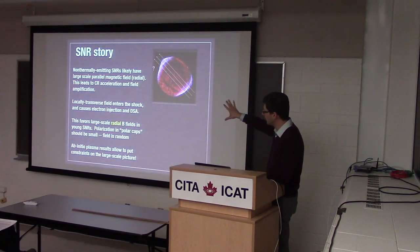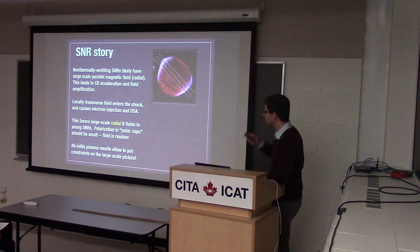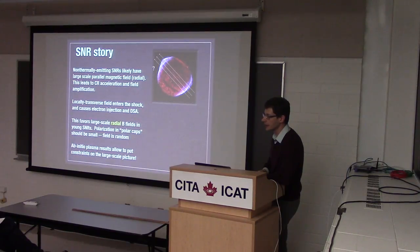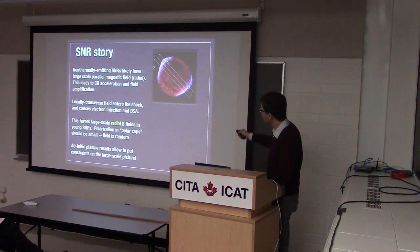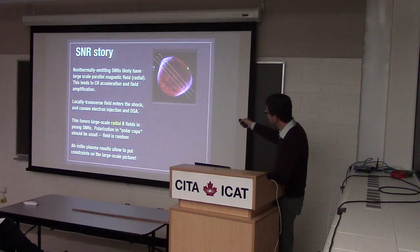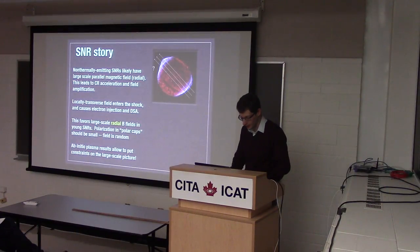Taking this at face value, we can apply it to a supernova remnant. Here's supernova 1006, which has two interesting polar caps of emission. One interpretation is that there is a large-scale magnetic field oriented such that these regions are quasi-parallel and these are quasi-perpendicular. In the quasi-parallel regions, we expect strong acceleration of protons, which drives turbulent magnetic fields, which reflects electrons and ultimately results in electron acceleration. In the quasi-perpendicular regions, perhaps electrons can get accelerated more weakly.